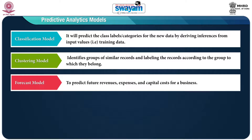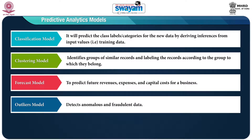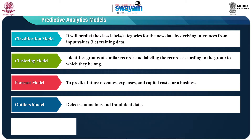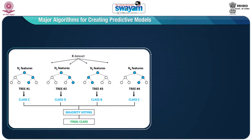The next one is the forecast model — this is used to predict future revenues, expenses, and capital costs for a business. The next one is the outlier model — this detects anomaly data and fraudulent data. The next one is the time series model — this model captures data over a period of time for prediction.